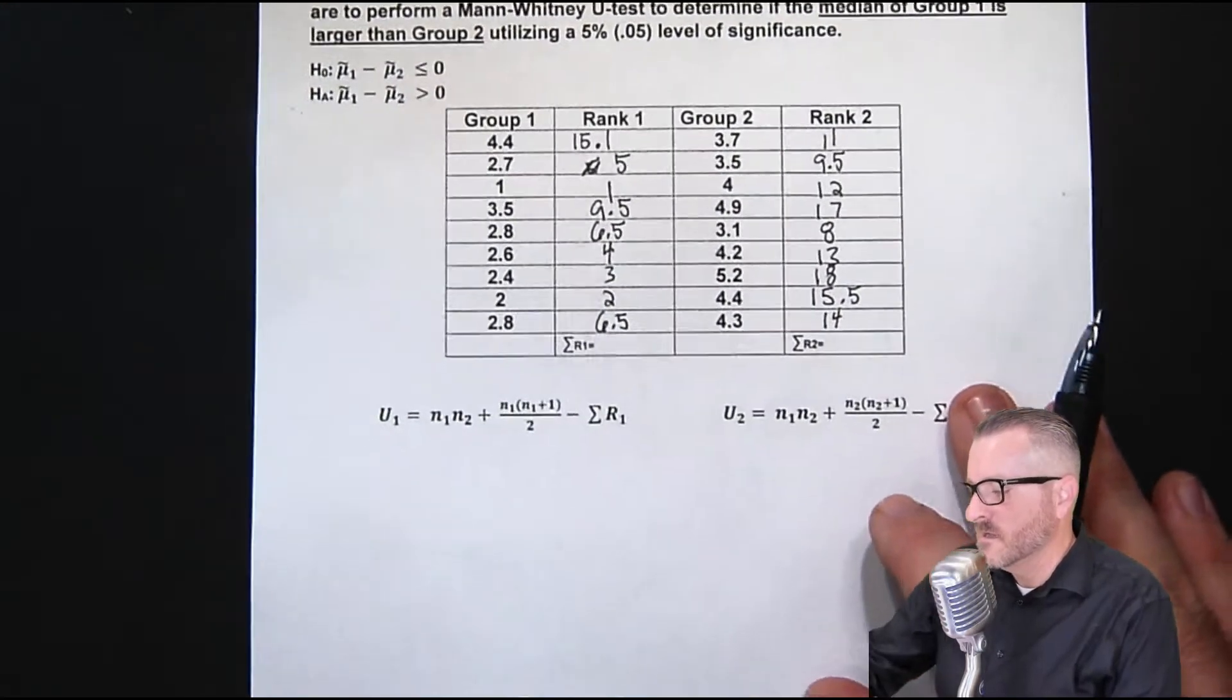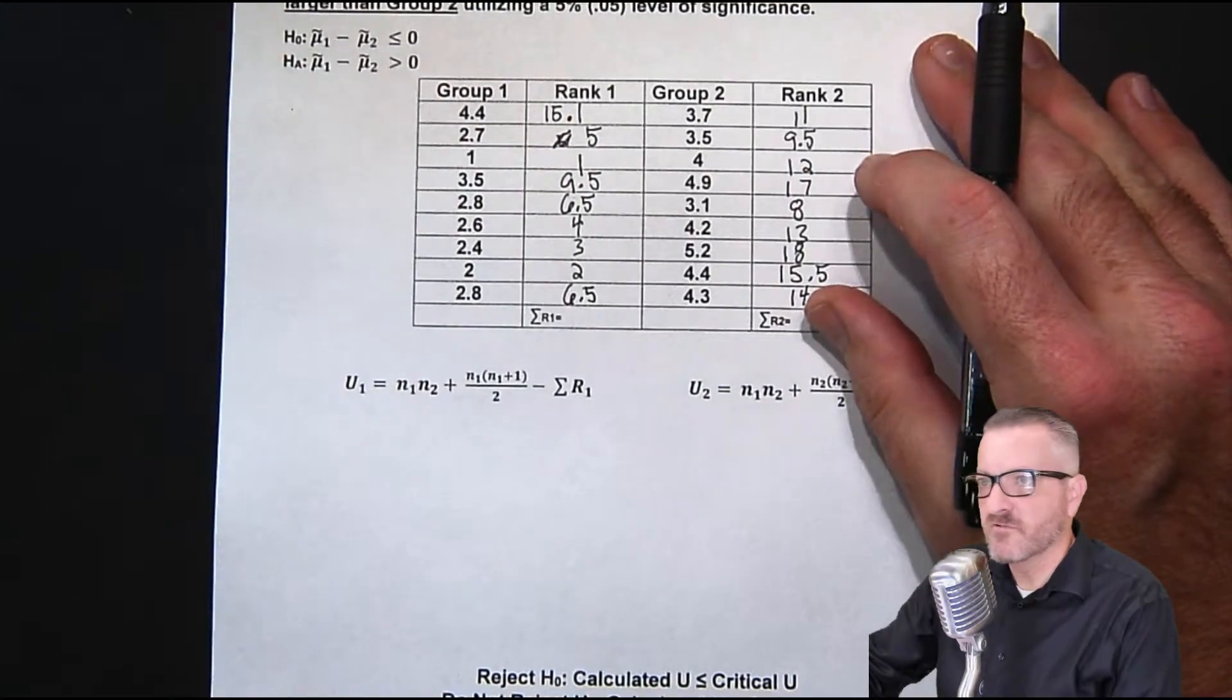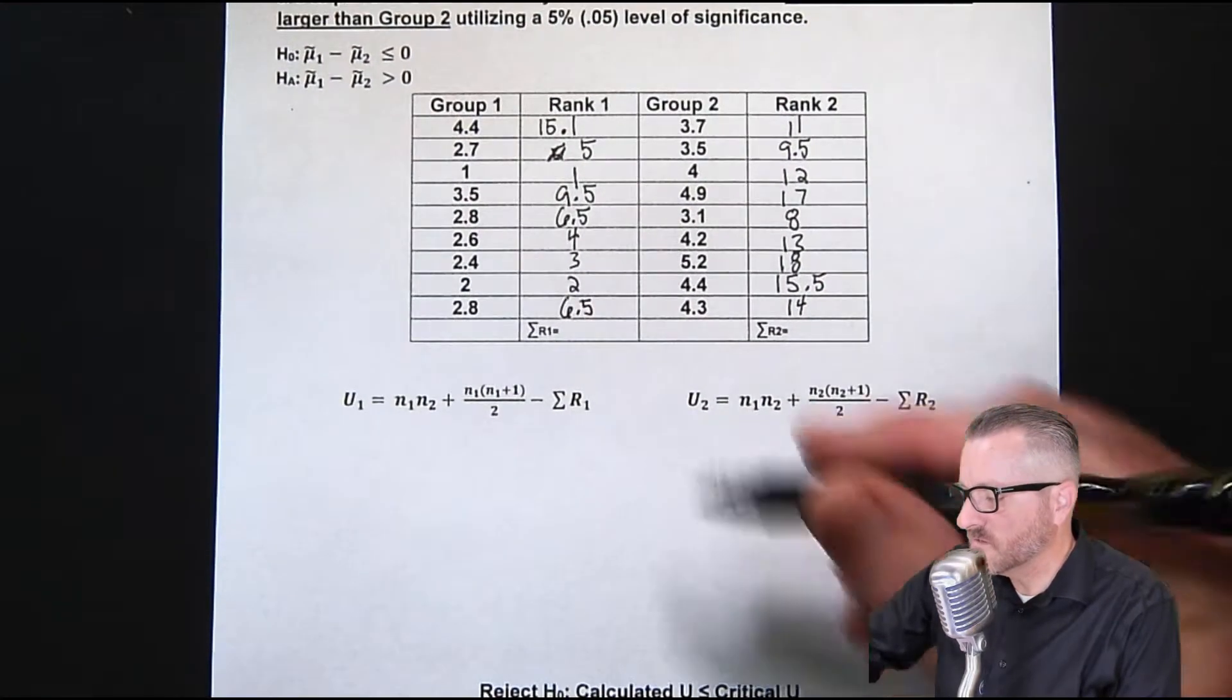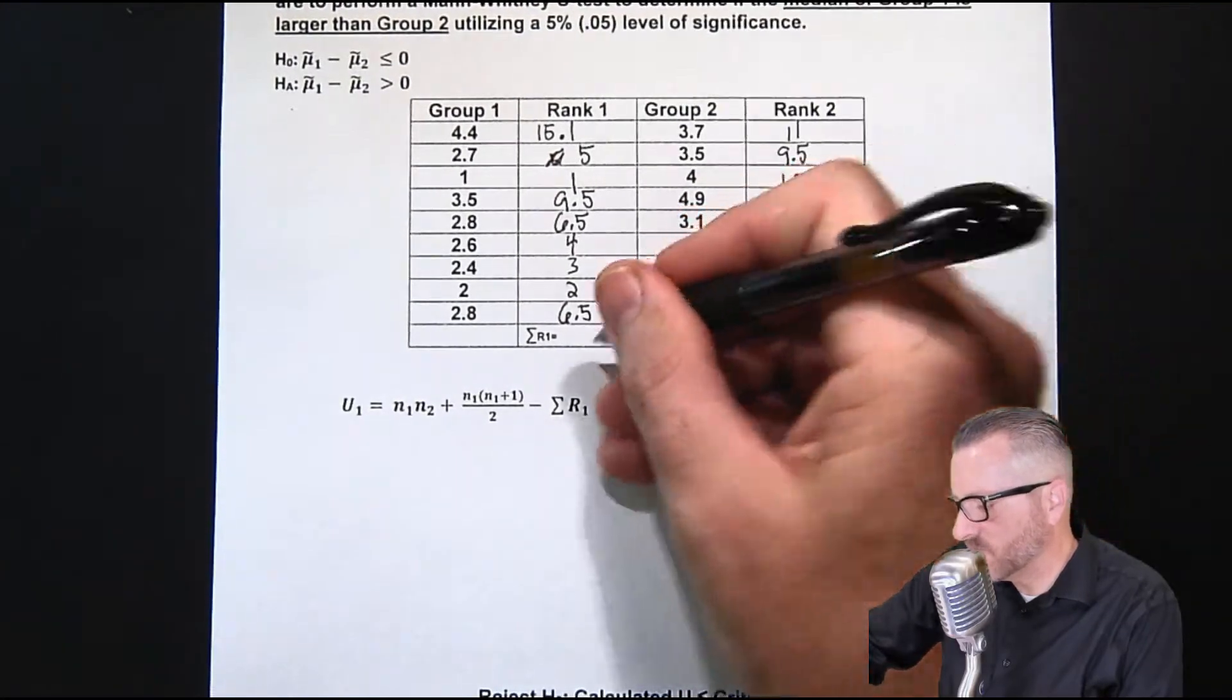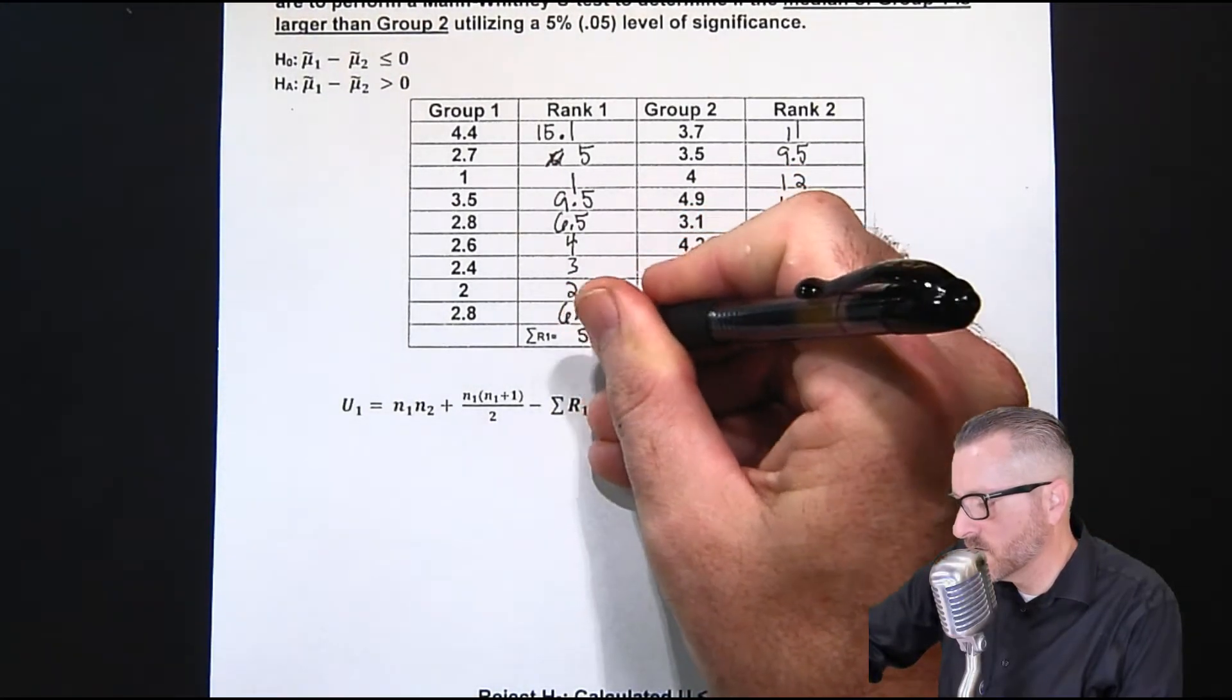So now let's take a look at this. Now we have the formula. And the other thing that we do with this is we add up the ranks. So when we add up the ranks, it's 53.